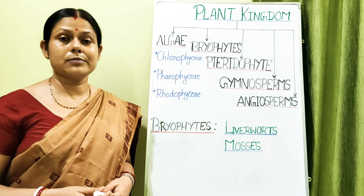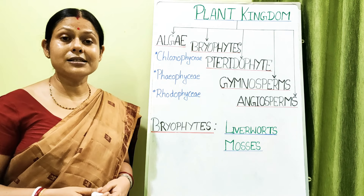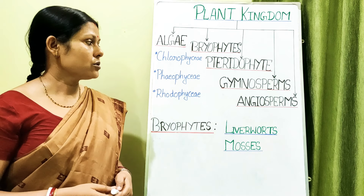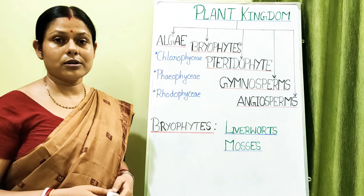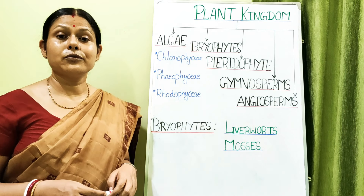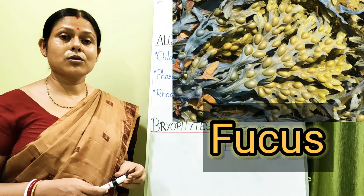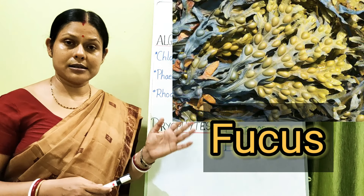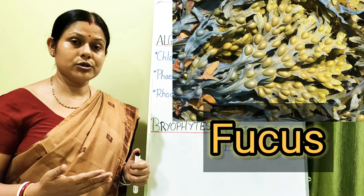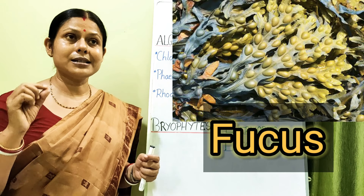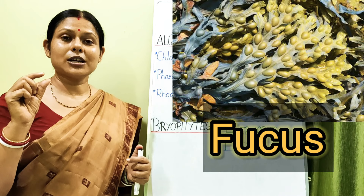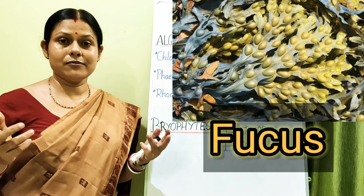The cell wall of Phaeophycean members is provided with algin, which prevents desiccation. One member, Fucus, is a phaeophycean alga that grows under the ocean and is provided with air bladders, which allow it to float easily.